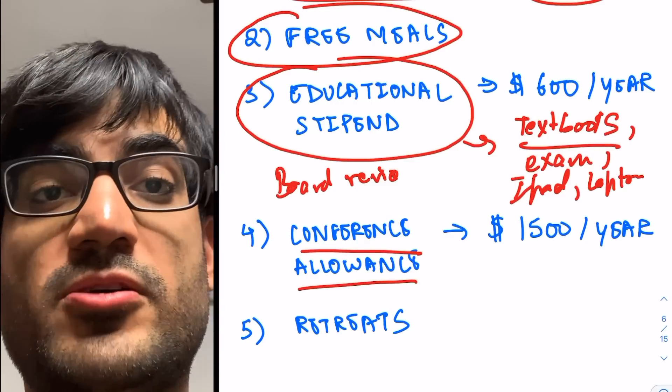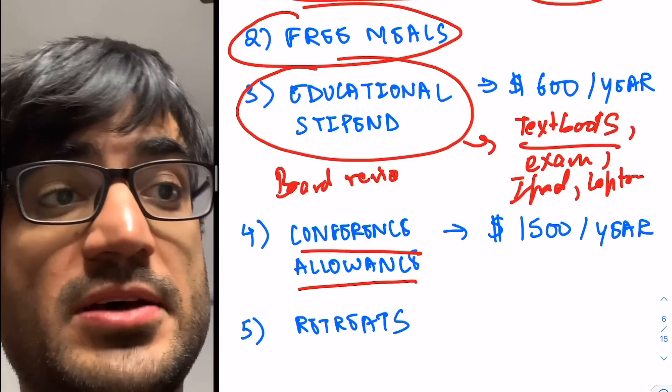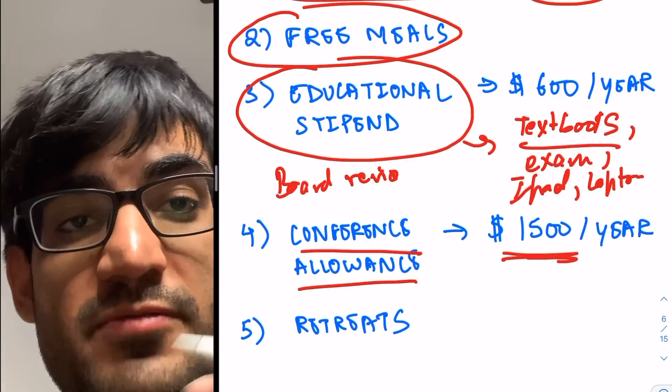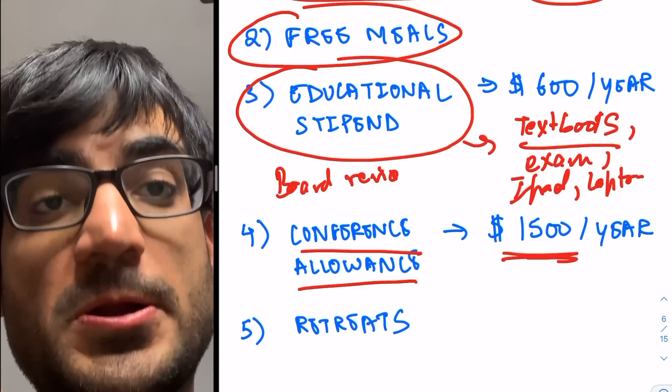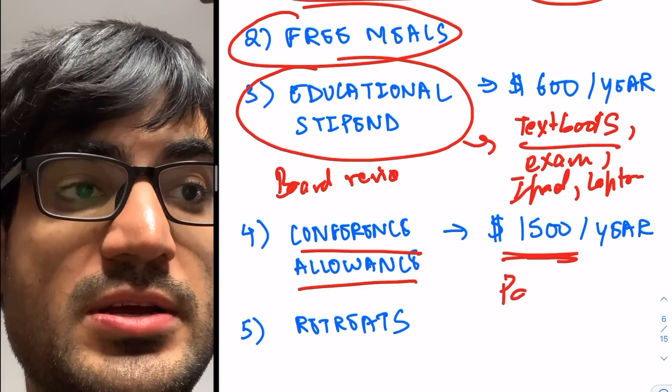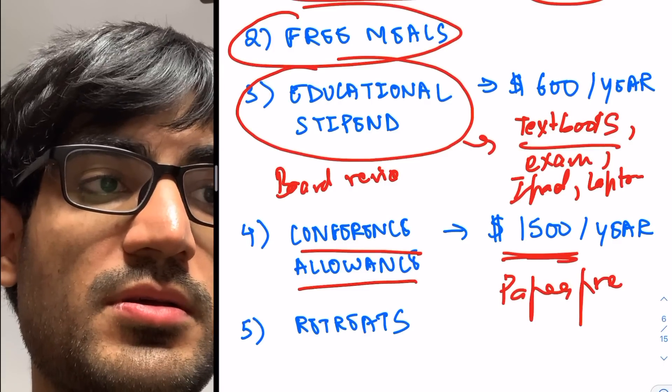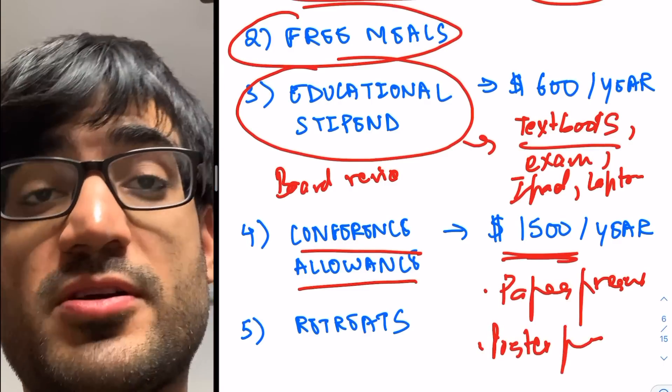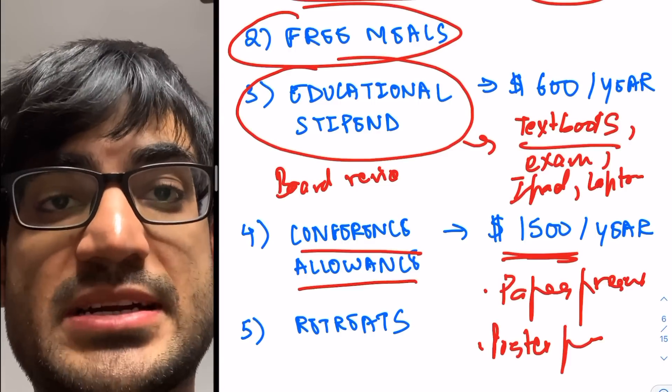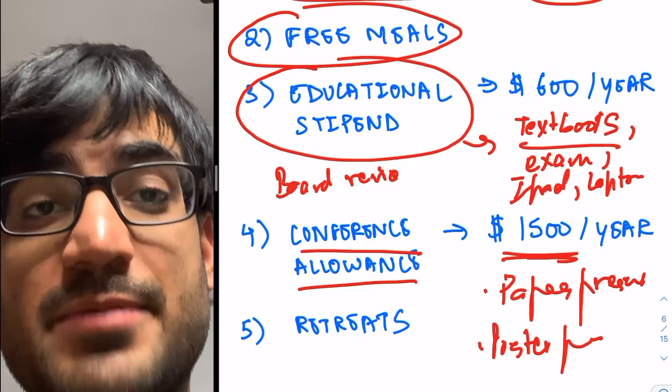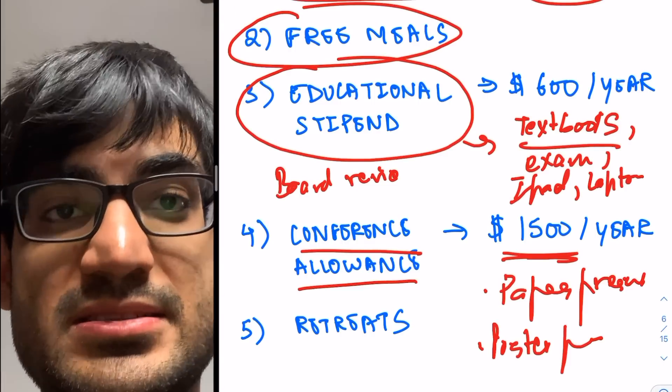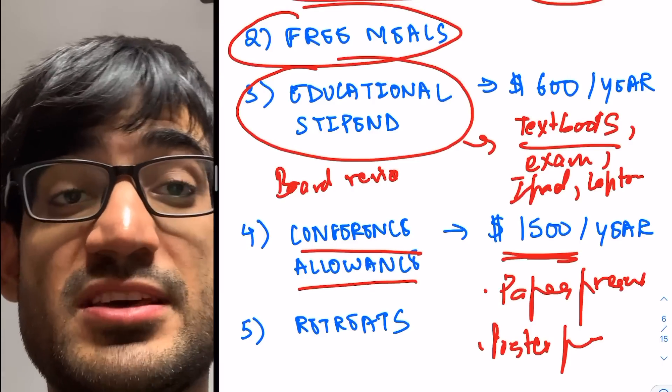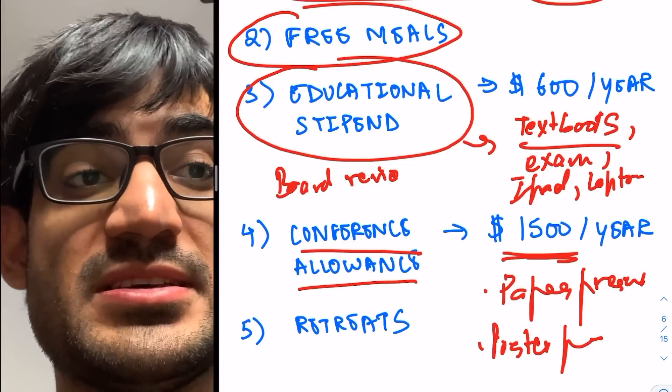Conference allowance, and the maximum I've seen for this is up to $1,500 per year. So a lot of residency programs, they want to promote paper presentation, poster presentation, and a lot of these research-based activities, these academic activities. And they want their residents to go and represent their program in certain conferences.